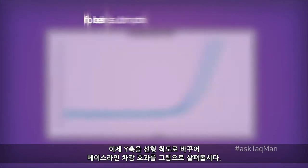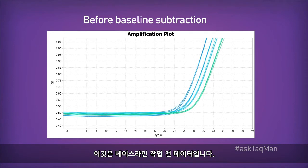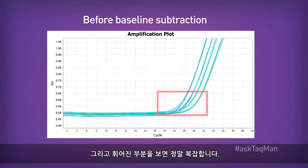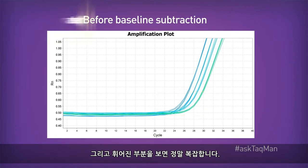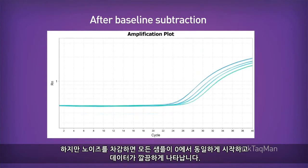Let's switch the y-axis to a linear scale for the moment to illustrate the effect of baseline subtraction. Here's our data prior to baselining. Note how every sample begins from a slightly different spot on the y-axis, causing our geometric phase data — this curvy part over here when we're in a linear scale — to look horrible. But once we subtract noise, every sample begins from the same point zero, and as a result, the data clean up nicely.